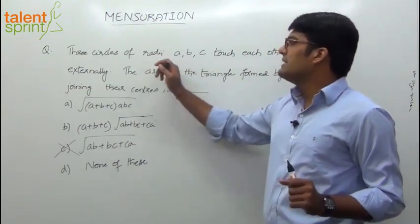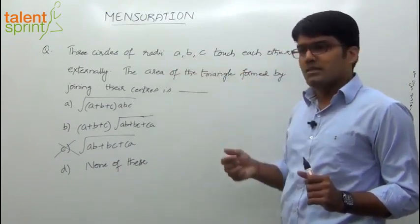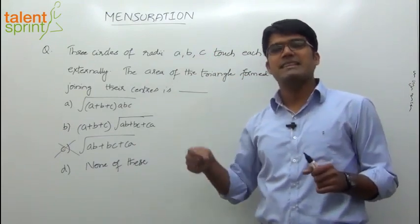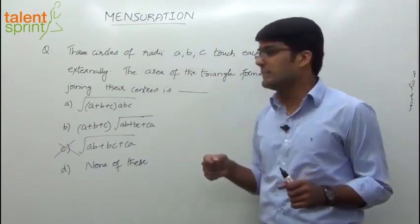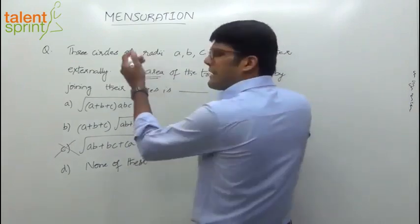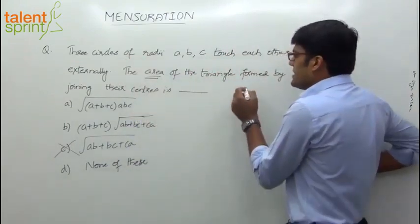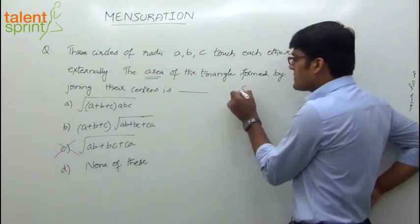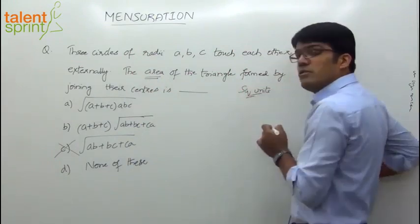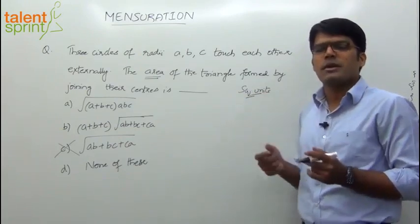There are three circles of radius A, B, and C respectively. These are nothing but lengths — A is length, B is length, and C is also length. Now, we need to find out the area of the triangle. Area is always measured in square units, so the answer should be in square units. When do we get square units? Length into length gives square units.